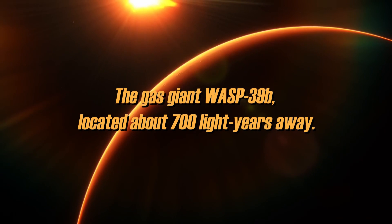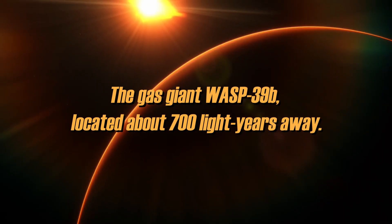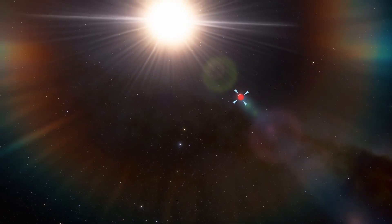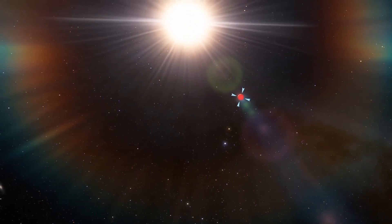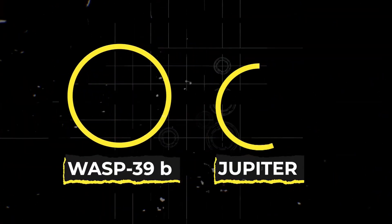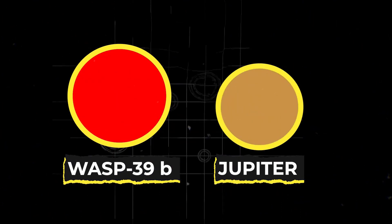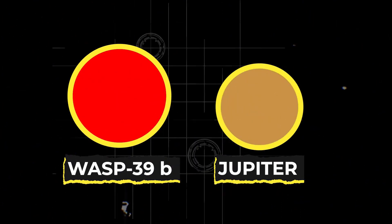A fascinating example of this is the gas giant WASP-39b, located about 700 light-years away. This planet shows us how revealing the investigation of these transit signals can be. Since WASP-39b exceeds mighty Jupiter in size by a factor of 1.3, analysis of its gaseous envelope has been especially revealing.